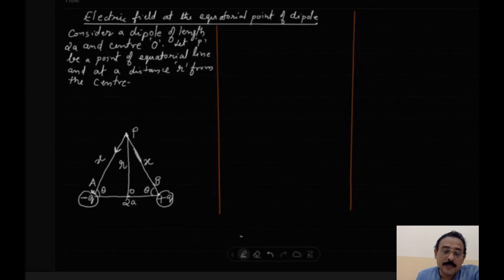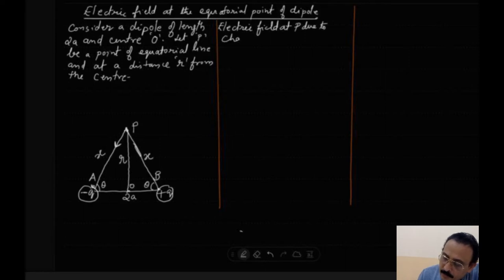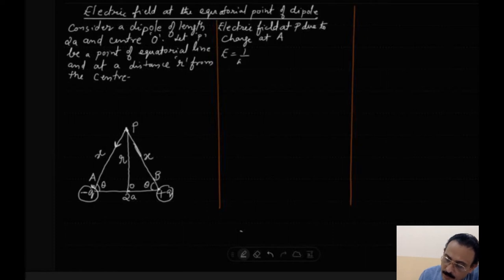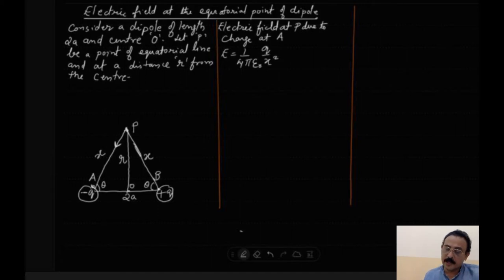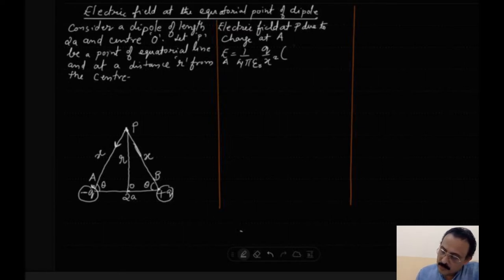The electric field at P due to the charge at A is given by: E_A = (1 / 4πε₀) × (q / x²), directed towards A since it is an attractive force.